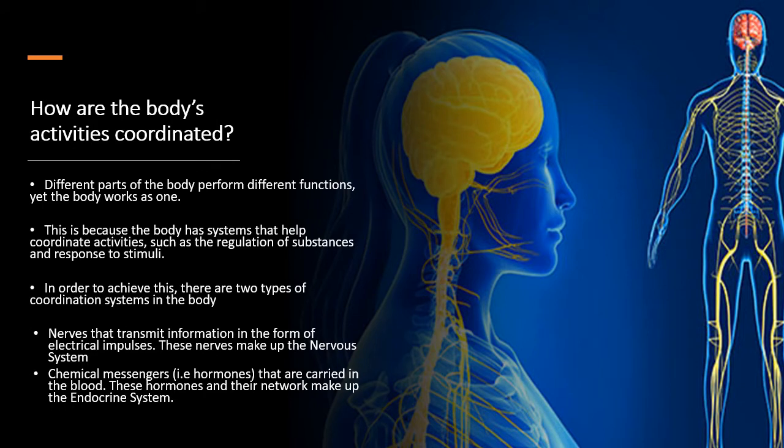This is a rehash from the homeostasis chapter, where we discussed the systems that coordinate responses within the body. We have the central nervous system and the peripheral nervous system, but we also have the hormonal system, called the endocrine system. The endocrine system releases hormones to respond to changes in the body, and the nervous system releases electrical impulses to respond to changes in the body.